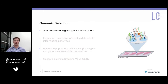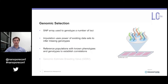Traditional genomic selection in agriculture uses a SNP chip microarray to genotype a number of loci spread evenly throughout the genome. We then use a library of haplotypes to infer missing genotypes in a method known as imputation, and this leverages the power of existing datasets.